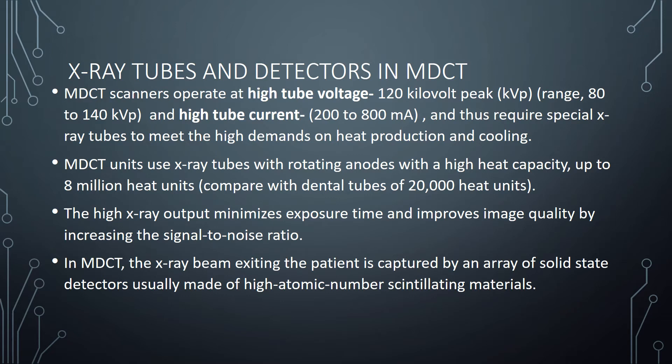When talking about X-ray tubes and detectors in multi-detector CT scanners, these operate at very high tube voltages, generally about 120 kV but ranging between 80 to 140 kV, and have high tube currents in the 200 to 800 mA range. They require special X-ray tubes to meet high demands on heat production and cooling. MDCT uses X-ray tubes with rotating anodes with a high heat capacity of up to 8 million heat units, compared to just around 20,000 heat units for a dental unit.